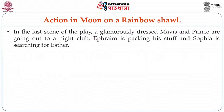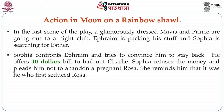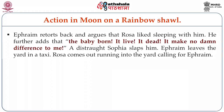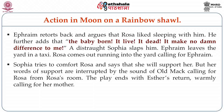In the last scene of the play, a glamorous red-dressed Mavis and Prince are going out to a nightclub. Ephraim is packing his stuff and Sophia is searching for Esther. Sophia confronts Ephraim and tries to convince him to stay back. He offers ten-dollar bills to bail out Charlie. She refuses the money and pleads with him not to abandon a pregnant Rosa, reminding him that he first seduced her. Ephraim retorts that Rosa liked sleeping with him and adds, 'The baby born, it live, it dead — it make no damn difference to me.' A distraught Sophia slaps him. Ephraim leaves in a taxi and Rosa comes running into the yard calling for him. Sophia tries to comfort Rosa, but her words are interrupted by the sound of Old Mac calling for Rosa from her room. The play ends with Esther's return, warmly calling for her mother.